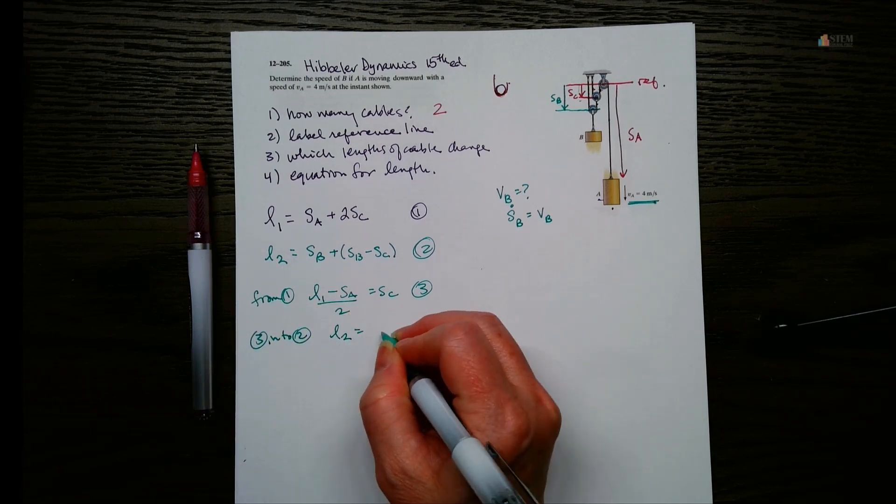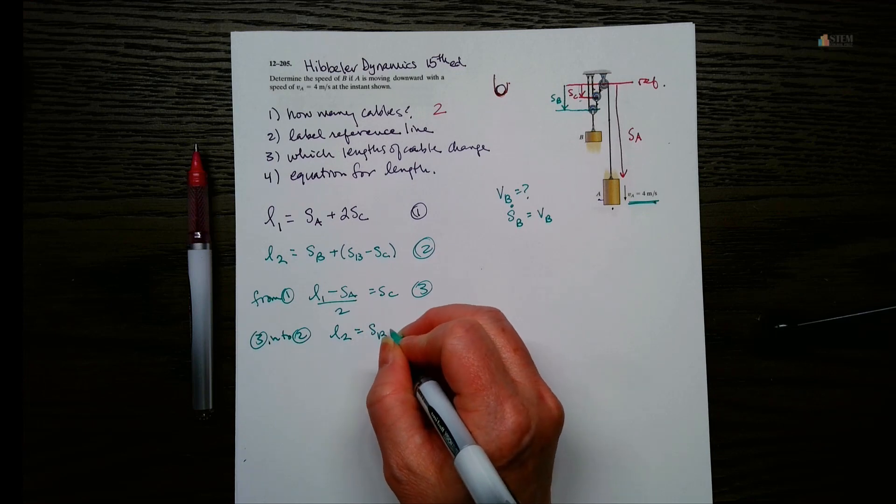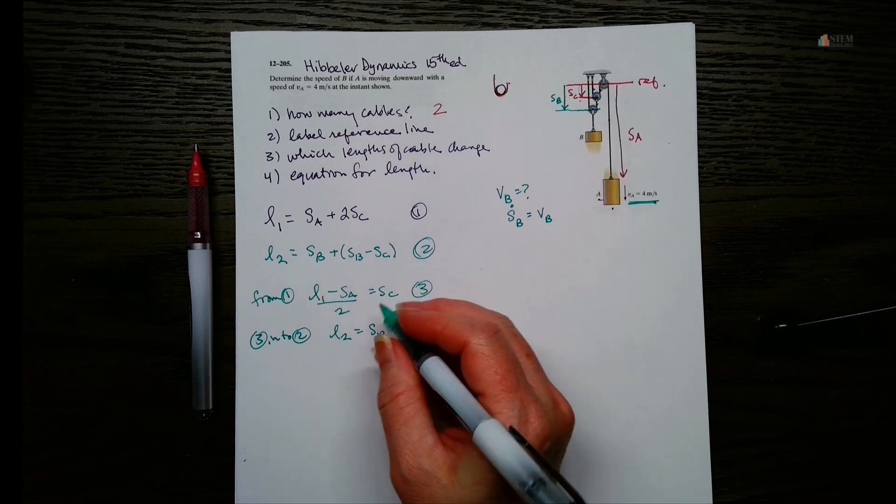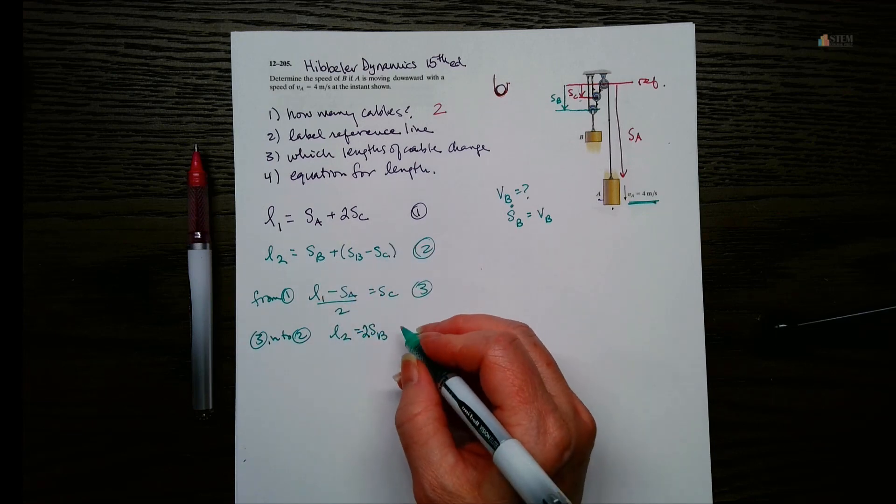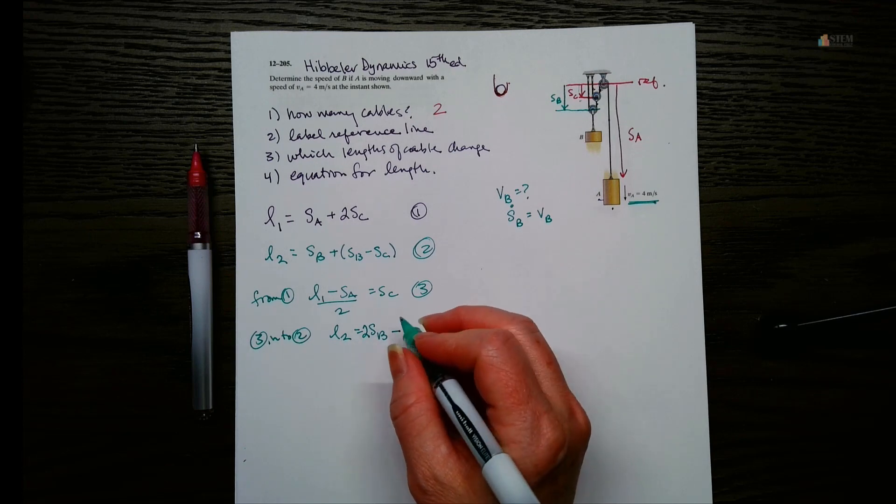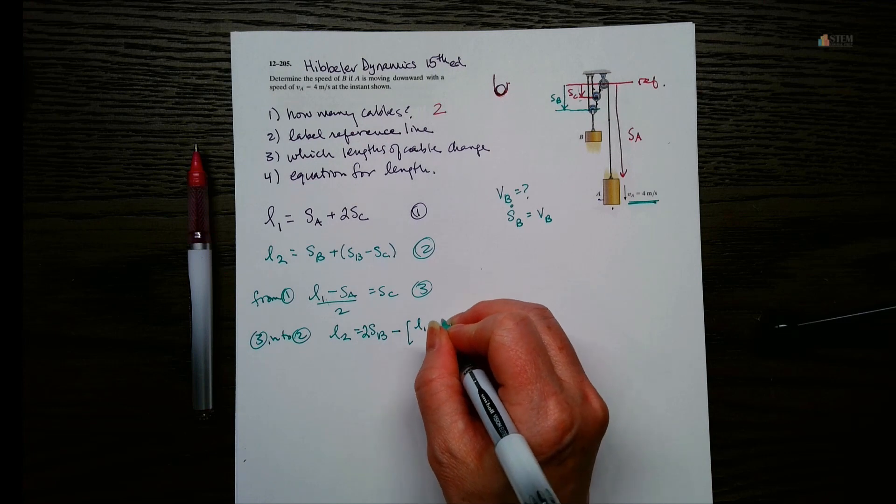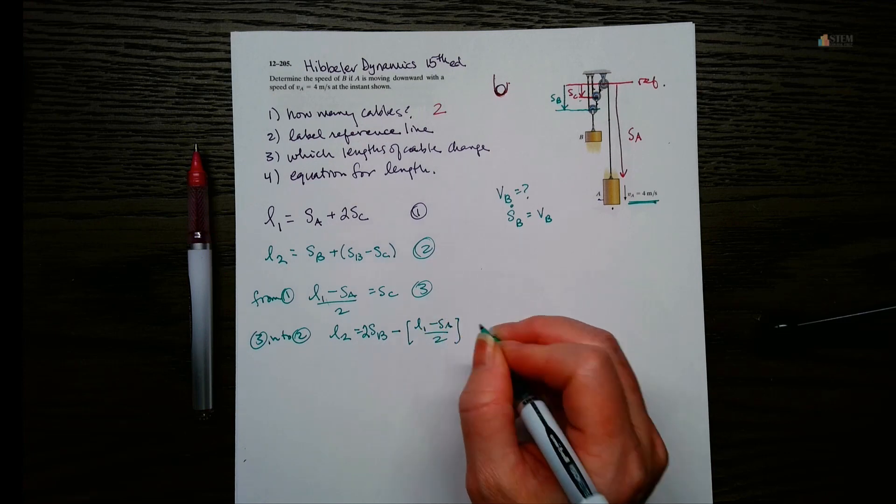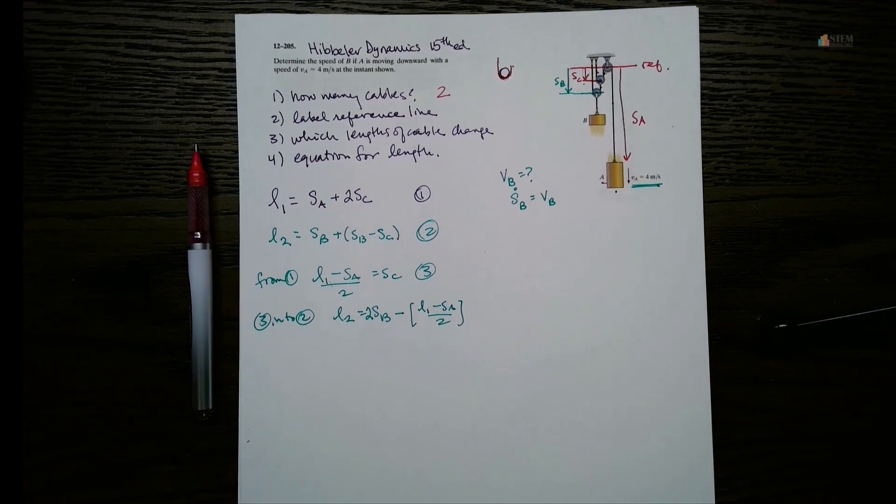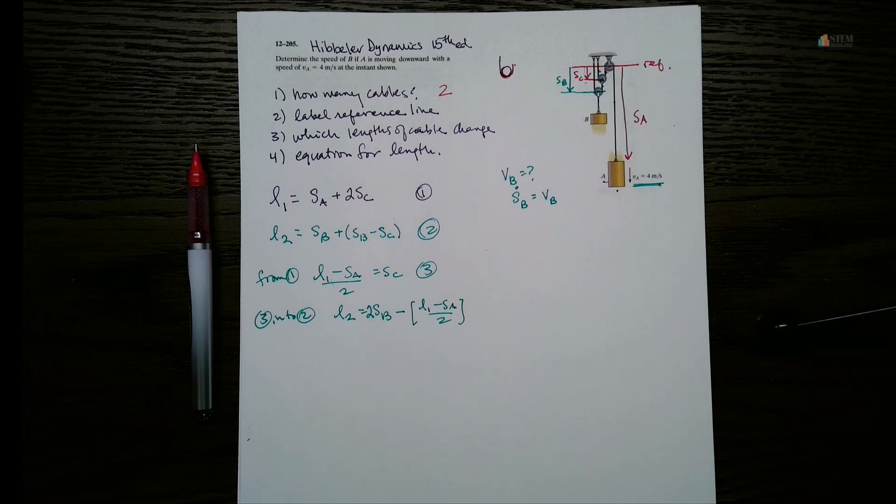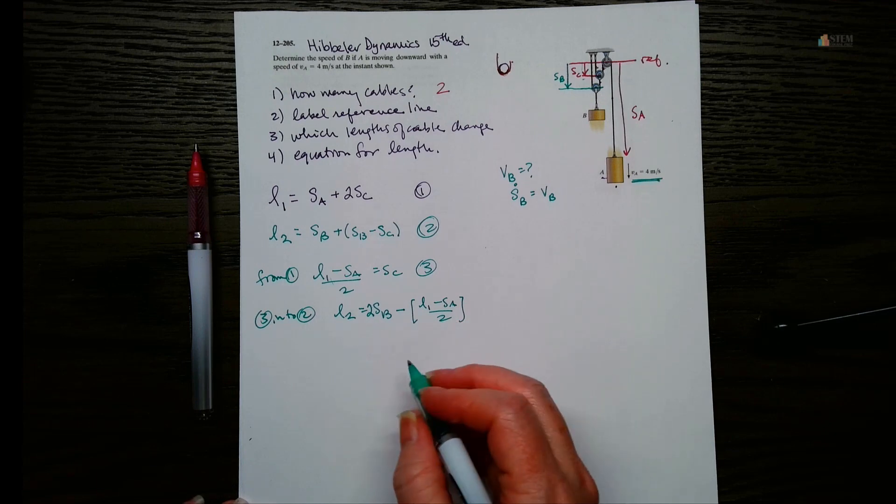So now we'll have L2 equals SB. And then it's plus SB, right? So we can just put a 2 here. And then minus SC, which is this. Alright, so now we've got that. And then we can go through and simplify it if we want. Okay, so let's go ahead and simplify this.